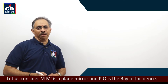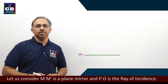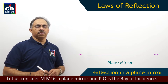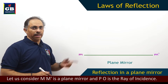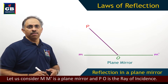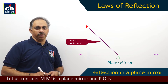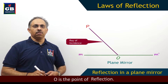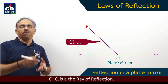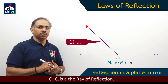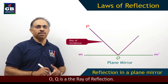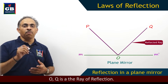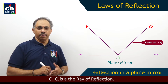When we consider reflection in a plane mirror, see an example here — MM' is a plane mirror. There is a ray of light incident on the plane mirror, so PO is the incident ray and O is the point of incidence. The incident ray is reflected back into the same medium — that is what reflection means — so OQ is the reflected ray. O is the point of incidence on the mirror MM'.